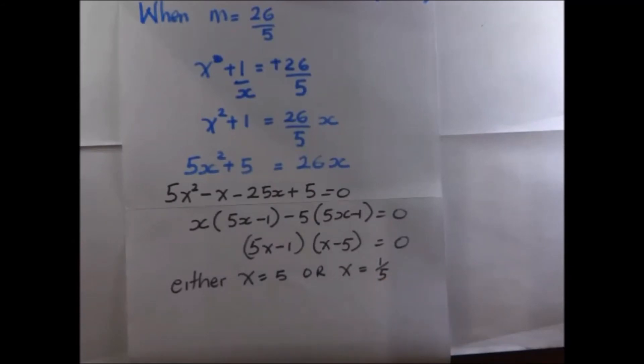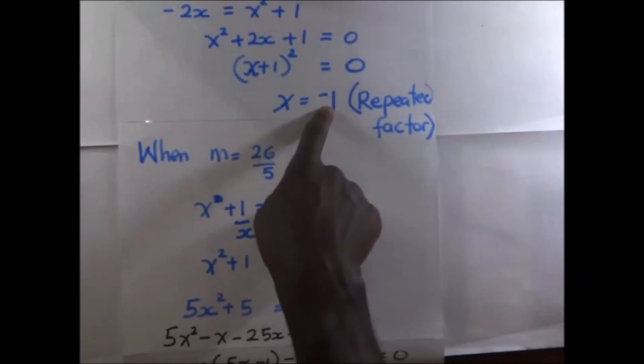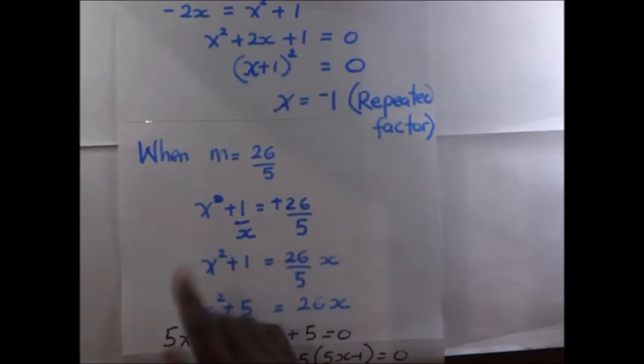the final answer is the factors of this polynomial are going to be 5, a fifth, and this negative 1, which is a repeated factor. So those are the roots of the polynomial.